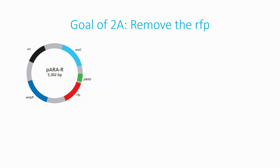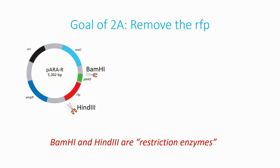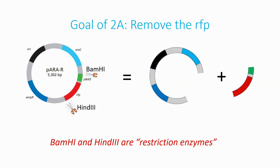In Lab 2A, we start with a PARA-R plasmid, which was delivered to the classroom. The aim of Lab 2A is to separate the RFP gene from the PARA-R plasmid using restriction enzymes BAMH1 and HIN-D3. BAMH1 targets the plasmid at the edge of promoter P-BAD, and HIN-D3 makes a cut at the end of the RFP gene. The result is two strands: the PARA-R plasmid minus the RFP and P-BAD, and a strand with the RFP and P-BAD. When a plasmid is cut by restriction enzymes, we say it is a digested plasmid.